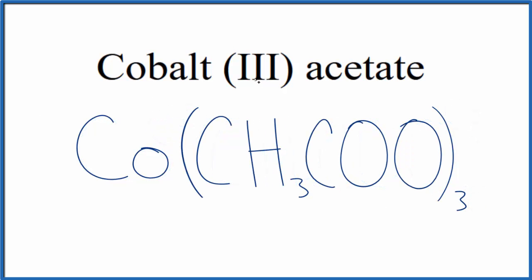So this is the formula for cobalt-3-acetate. Cobalt, we know, is three plus, so we need three of these acetate ions. Each one is one minus.